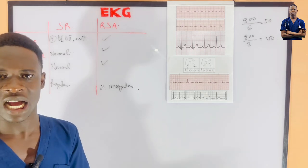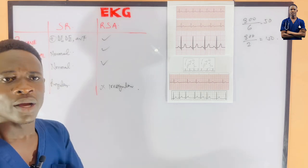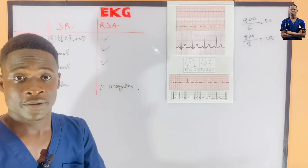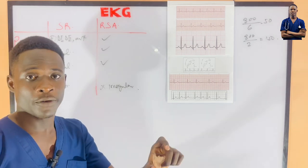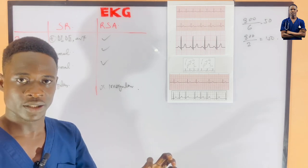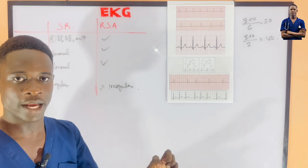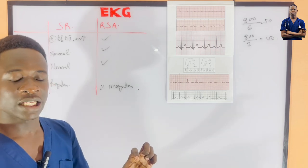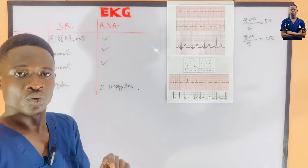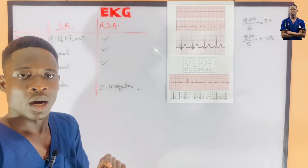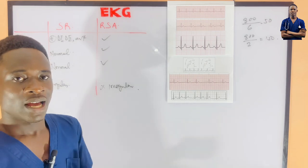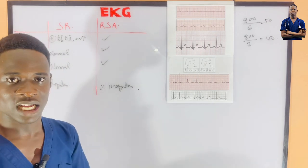During inhalation, the vagus nerve that controls the SA node gets inhibited, and because of that there is an increase in heart rate. When you exhale, the vagus nerve becomes free from inhibition and then controls the heart rate at the SA node. So during inhalation you get an increase in heart rate, and during exhalation you get a decrease in heart rate.